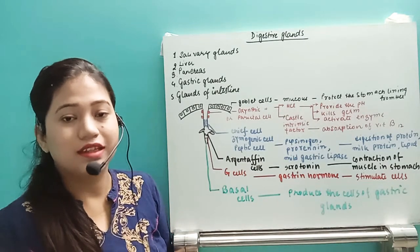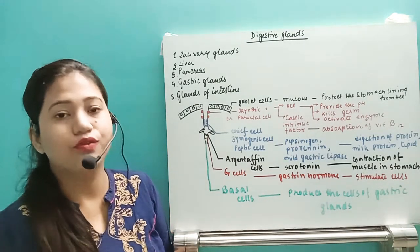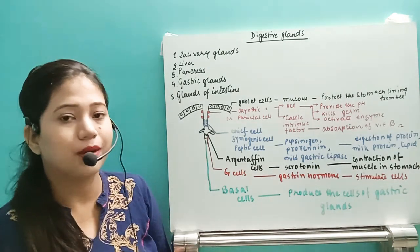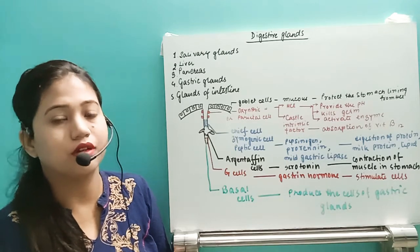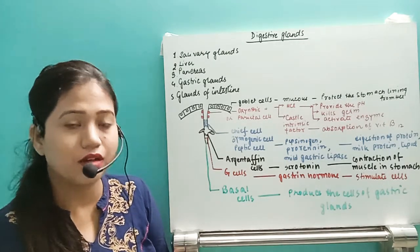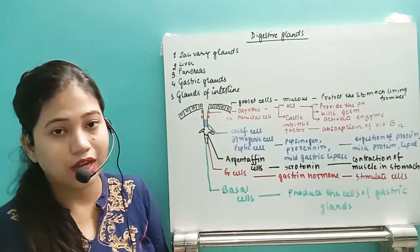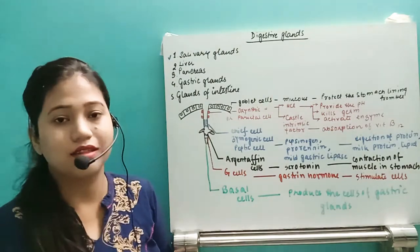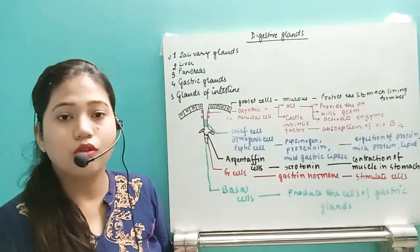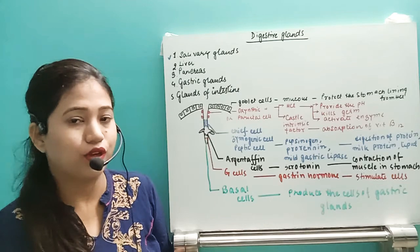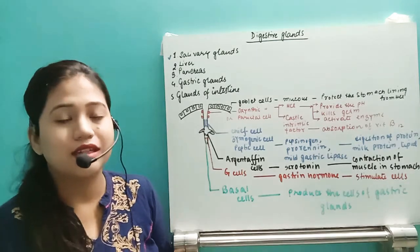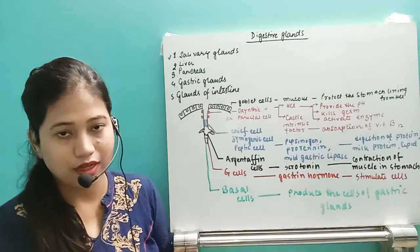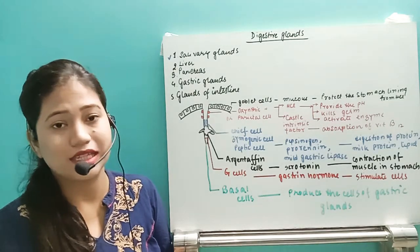Hello everyone, in this video we are going to see the digestive glands. In the earlier videos we have already completed the structure of the human digestive system, and we completed the first part of the digestive glands — that is the salivary glands. So I will recall that again. In our buccal cavity we have three pairs of salivary glands; the largest is the parotid gland.